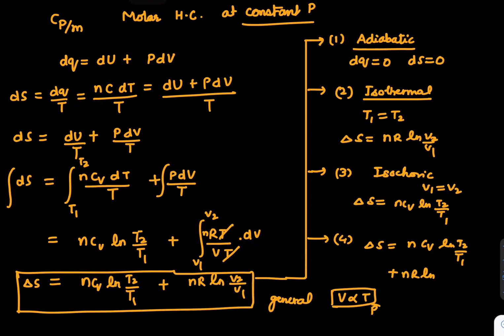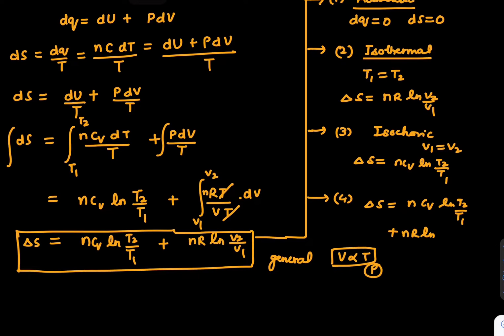So if you use this, ΔS = nCv ln(T2/T1) + nR ln(T2/T1). Using this data, it becomes (nCv + nR) ln(T2/T1), which is n(Cv + R) ln(T2/T1).